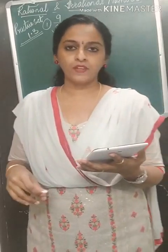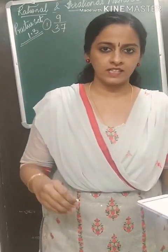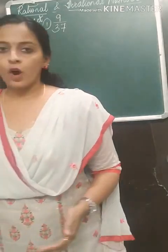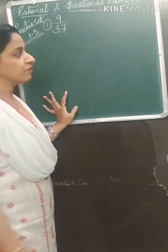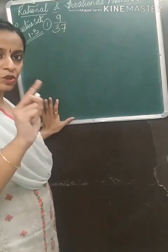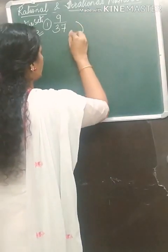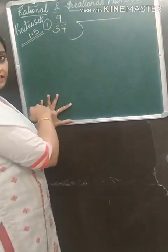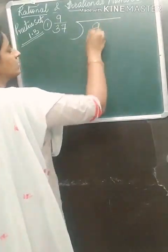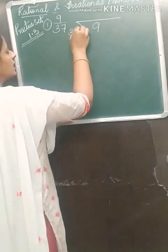Write the following rational numbers in decimal form. The first number is 9 upon 37. I have copied the question 9 upon 37. We will do the division — you have to show the division in your book. 9 will come here as the dividend and the divisor is 37.